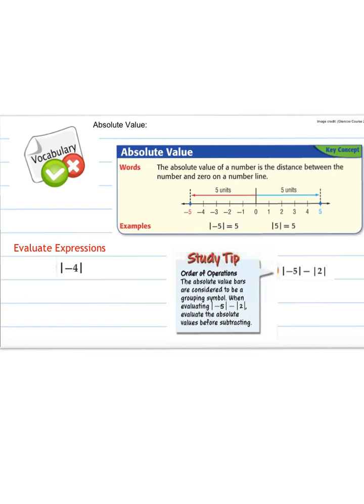Next thing here is absolute value. We have a vocab word that we should write down. Absolute value is the distance between the number and 0 on a number line. So for example here, the absolute value of negative 5: if we start at 0 and count 1, 2, 3, 4, 5 units between negative 5 and 0, therefore the absolute value of negative 5 is 5.